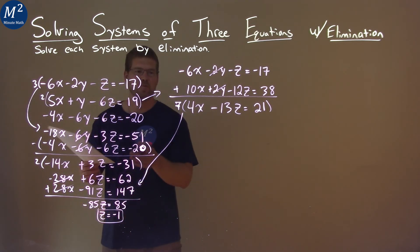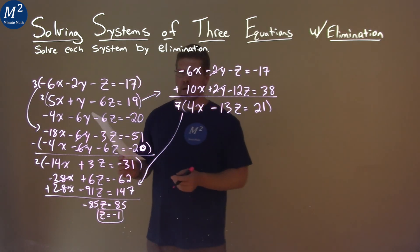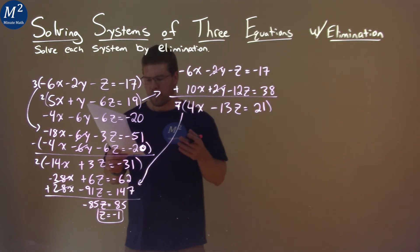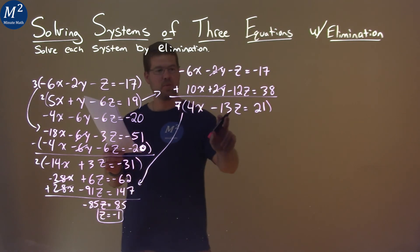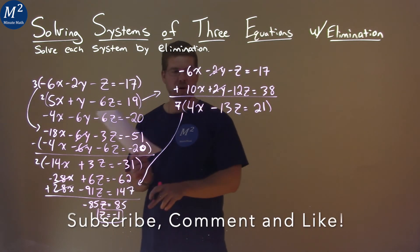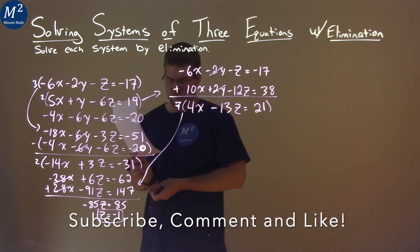So we have z equals negative 1 here. Alright, well what can I do now? I want to somehow get other variables. Well, if you take this equation right here and put z equals negative 1 for the z value. Negative 1 for the z, I have x by itself.